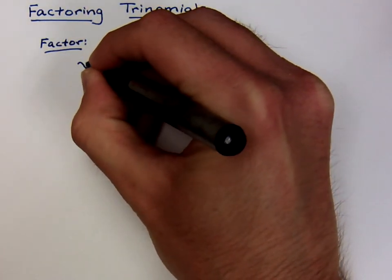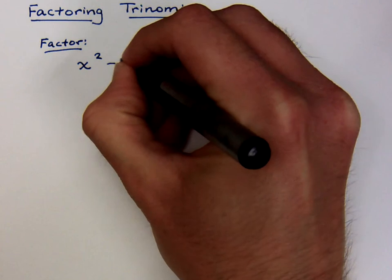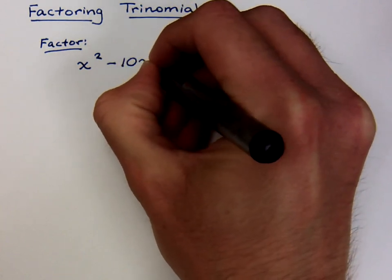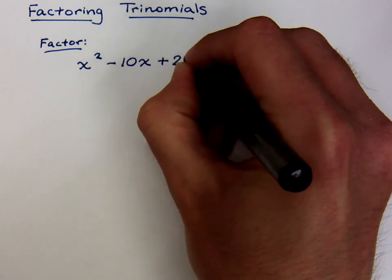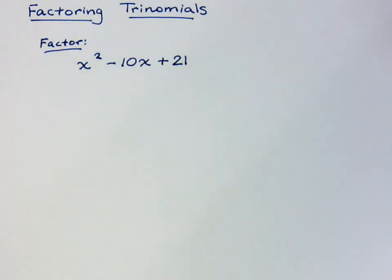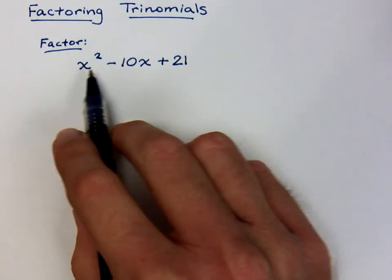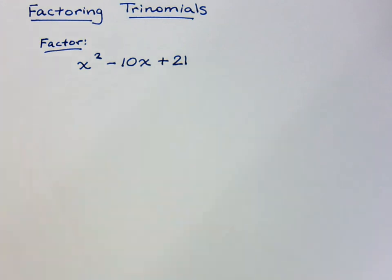Let's try this guy. Let's do x² - 10x + 21. Again, whenever we have anything that we want to factor, you always want to look for the greatest common factor first, always. Now, is there anything that these three guys have in common? No.